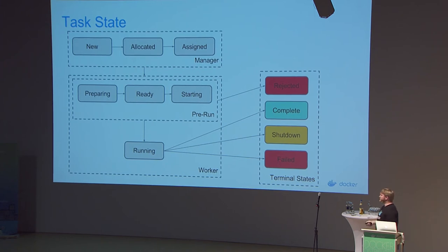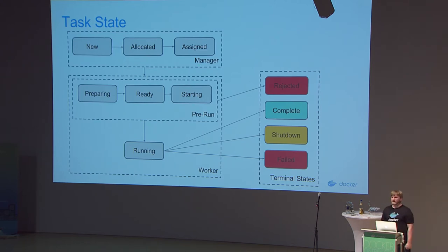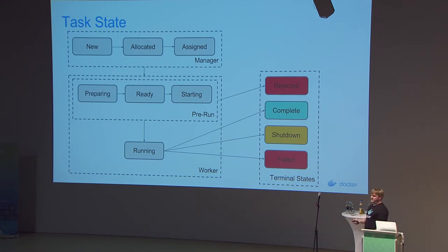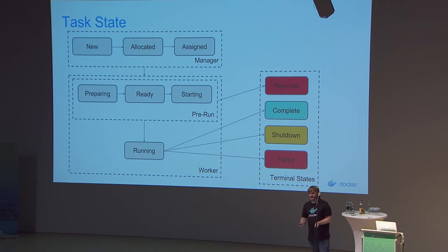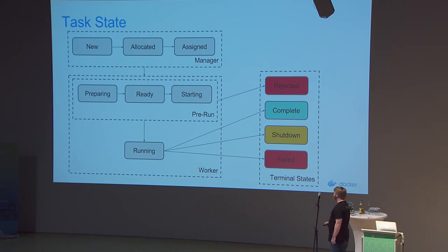These are one-shot operations in the cluster. We always proceed in the same direction through the task state to a terminal state. These are actually values of a Lamport clock, so new is always less than allocated. When you receive two task statuses, you know which value is current because it's less than the other.